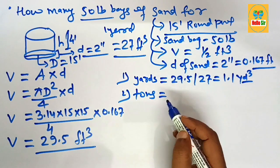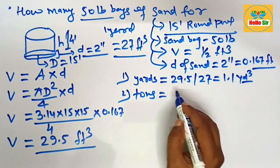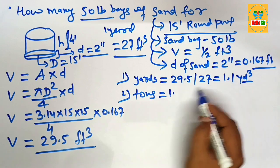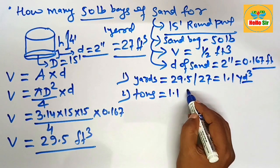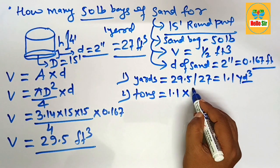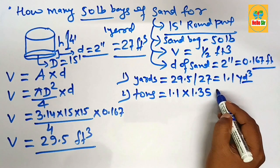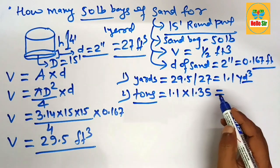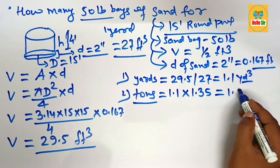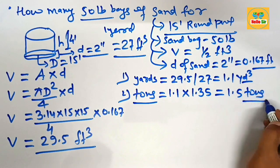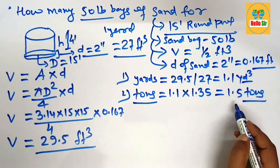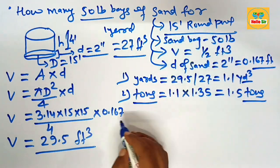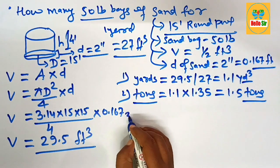To calculate how many tons of sand are required for a 15-foot round pool, multiply the cubic yards (1.1) by 1.35 to convert yards into tons. This comes out to about 1.5 tons.